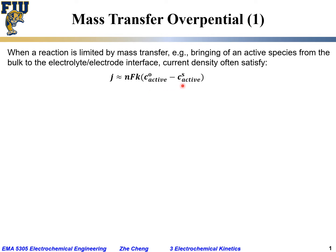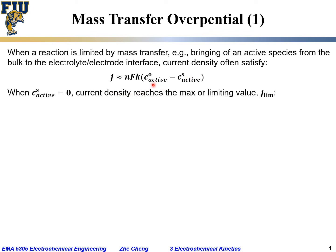This concentration difference determines how fast the reaction can occur and how much current density will be encountered. The nF factor converts moles of species into current density. This is the relationship when the reaction is limited by mass transport — bringing the species from deep within the system (C₀, the bulk concentration) to Cs at the surface.